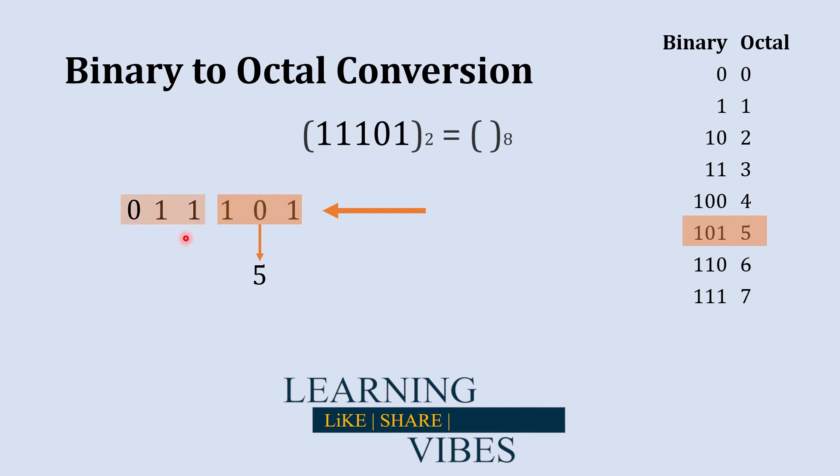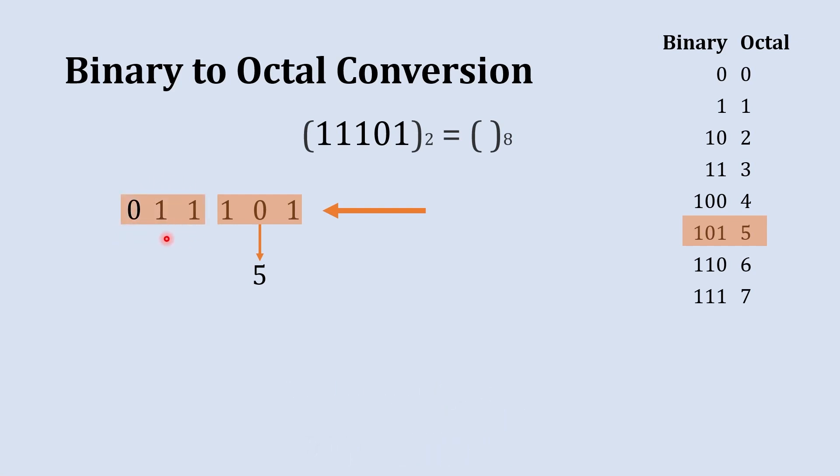Now we'll find the octal equivalent to this binary number. Here you can see 011 is three, so we'll write 3. The octal equivalent to this binary number is 35.